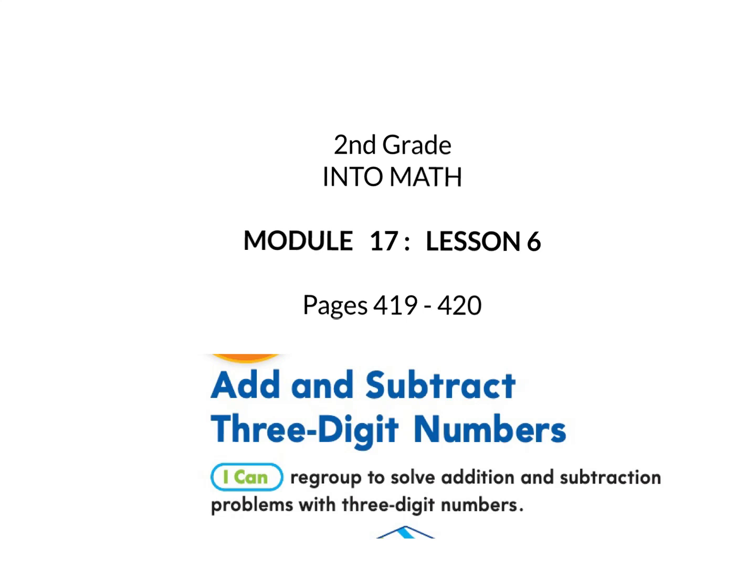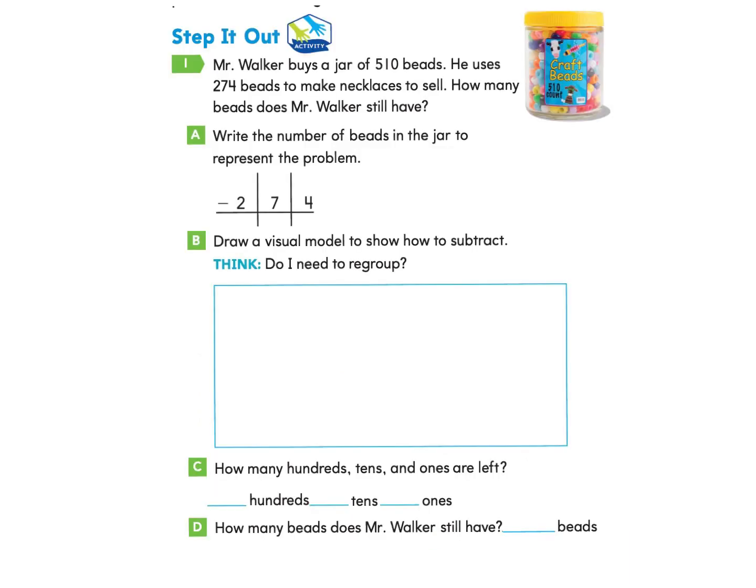This is Into Math for Second Grade, Module 17, Lesson 6: Add and subtract three-digit numbers. I can regroup to solve addition and subtraction problems with three-digit numbers. Please gather your workbook and a pencil and turn to page 419. We will begin on page 419 under Step It Out, Part 1.